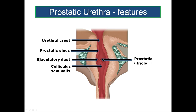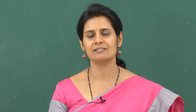Occasionally, the ejaculatory ducts will open into the prostatic utricle itself. Lateral to the urethral crest and the colliculus seminalis, you will find a linear depression or groove called the prostatic sinus on either side of the urethral crest. This prostatic sinus will receive the openings of the prostatic ducts — about 15 to 20 prostatic ducts open into this sinus.